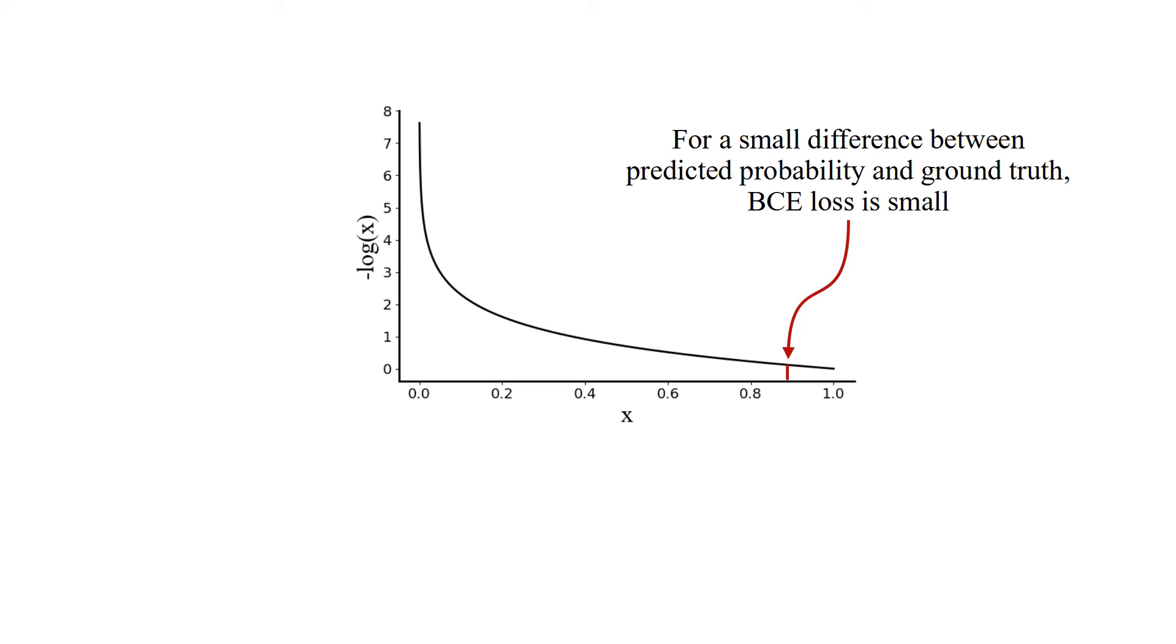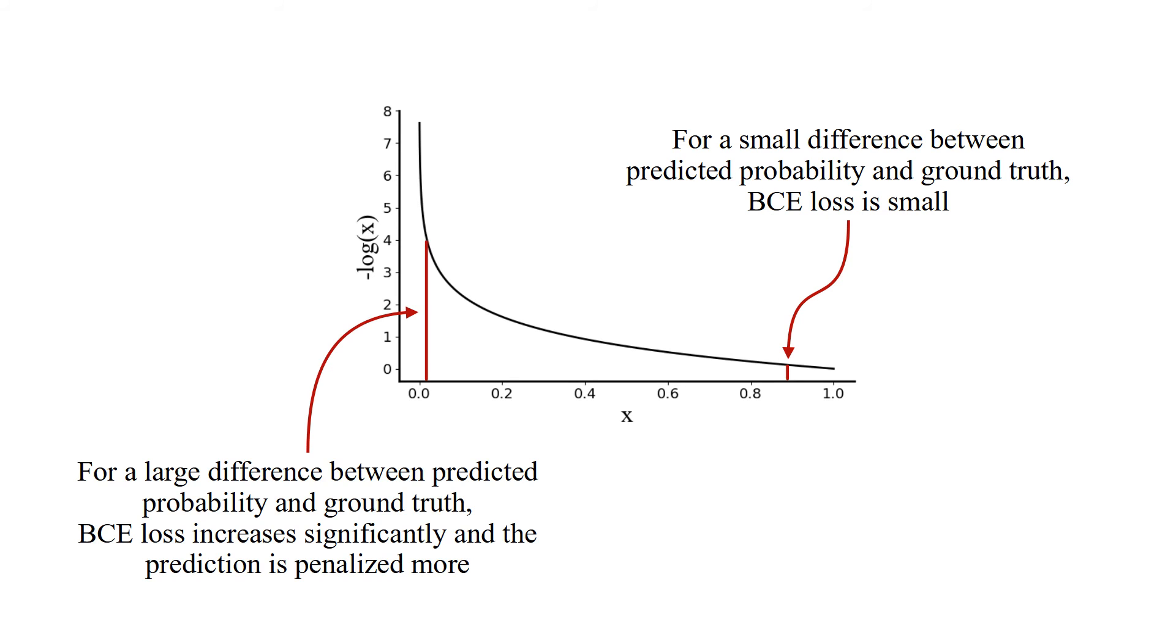For a small difference between predicted probability and ground truth, loss is small. For a large difference between predicted probability and ground truth, loss increases significantly and the prediction is penalized more.